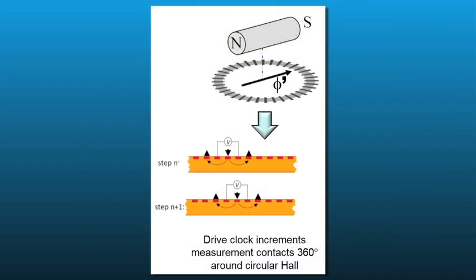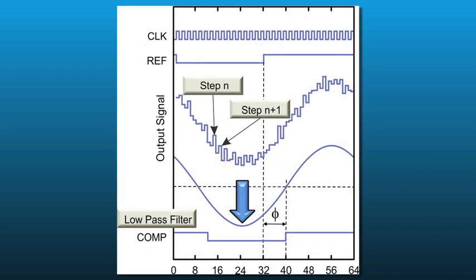We have the target magnet sitting above the CVH ring integrated into the angle sensor silicon. As the digital logic steps around the CVH ring, a coarse sine wave is created. The coarse sine wave then is passed through a bandpass filter and then rectified to produce a square wave signal.